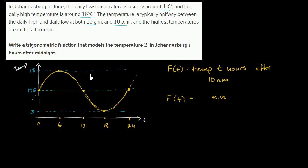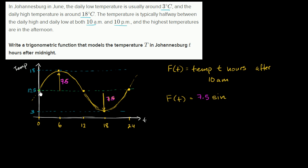Now let's think about the amplitude. How much do we vary from our midline? We are 7.5 above our midline at the high and 7.5 below at the low, so our amplitude is 7.5. Our period is 24 hours — this distance is 24 hours, which makes complete sense: after 24 hours, you're at the same point in the day. So we divide 2π by the period, giving us 2π over 24 times t.